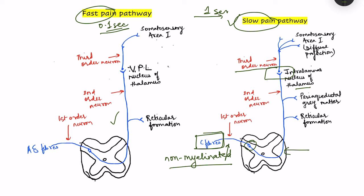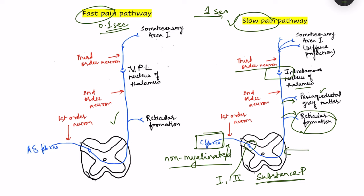Secondly, C fibers synapse in laminae 1 and 2 of the dorsal horn and release the neurotransmitter substance P. Substance P is slow to release and slowly accumulates over the region before acting, so it is also slow to act. Third, the number of collaterals arising from the slow pathway are much more — the collaterals go to the reticular formation, periaqueductal gray matter, and also to the amygdala.